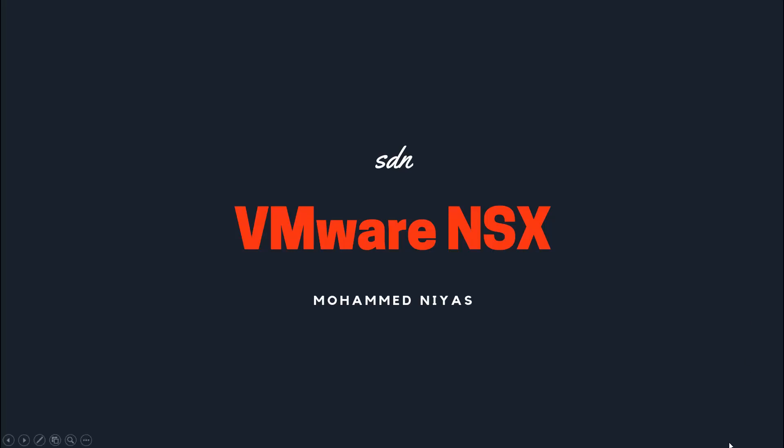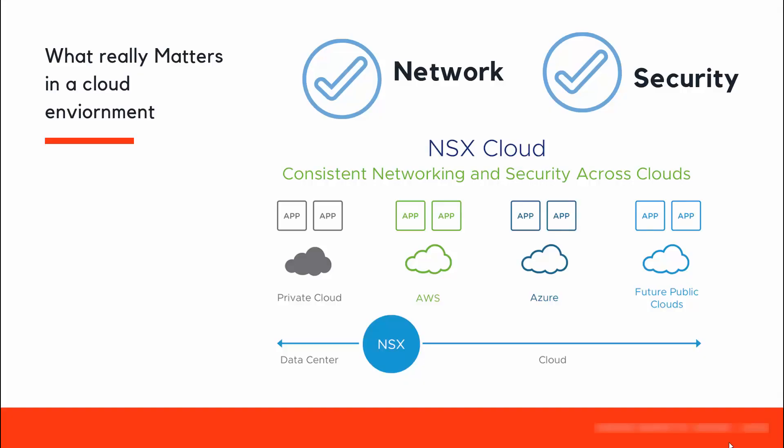In a multi-cloud environment, it means you have workloads running on different cloud providers and private cloud. Does it matter what ESXi or what storage is behind it? No. The real matter to be in consideration is about network and security. Do you think a hardware-dependent network can provide such consistency between the multi-cloud, private cloud, and whatever cloud you have? No. Only a network delivered in software can bring end-to-end consistency from data center to branch to cloud.